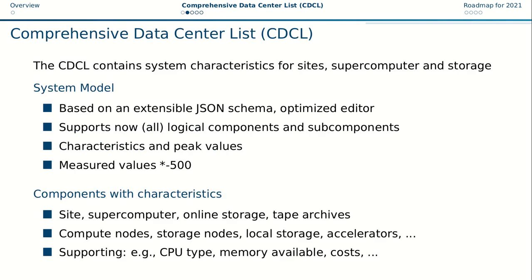Let's talk about the Comprehensive Data Center List, or CDCL in short. It aims to capture system characteristics for sites — so for data centers — and all the supercomputers and storage systems. It has a very comprehensive system model, which is also extendable. It tries to support all logical components and subcomponents relevant in a data center, including measured performance characteristics as well as theoretical characteristics.